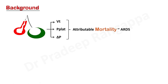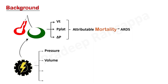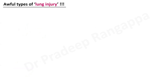When we talk about mechanical power, in addition to low tidal volume, plateau pressure, and driving pressure, we are looking at overall pressure, overall volume of the respiratory system, flow dynamics, and most importantly — respiratory rate, which was not given due emphasis in any of the previous variables. Mechanical power takes respiratory rate, flow, and all the elements a mechanical ventilator deals with, including P-plat and driving pressure.